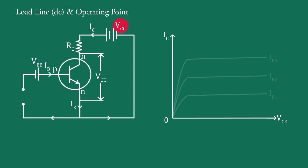VCC is the output supply, that is the collector voltage supply, and RC is the resistance. The current flowing through this resistance is IC. Therefore, using Kirchhoff's law for this loop, we can write: VCC = VCE + IC·RC. This is the equation of a straight line.